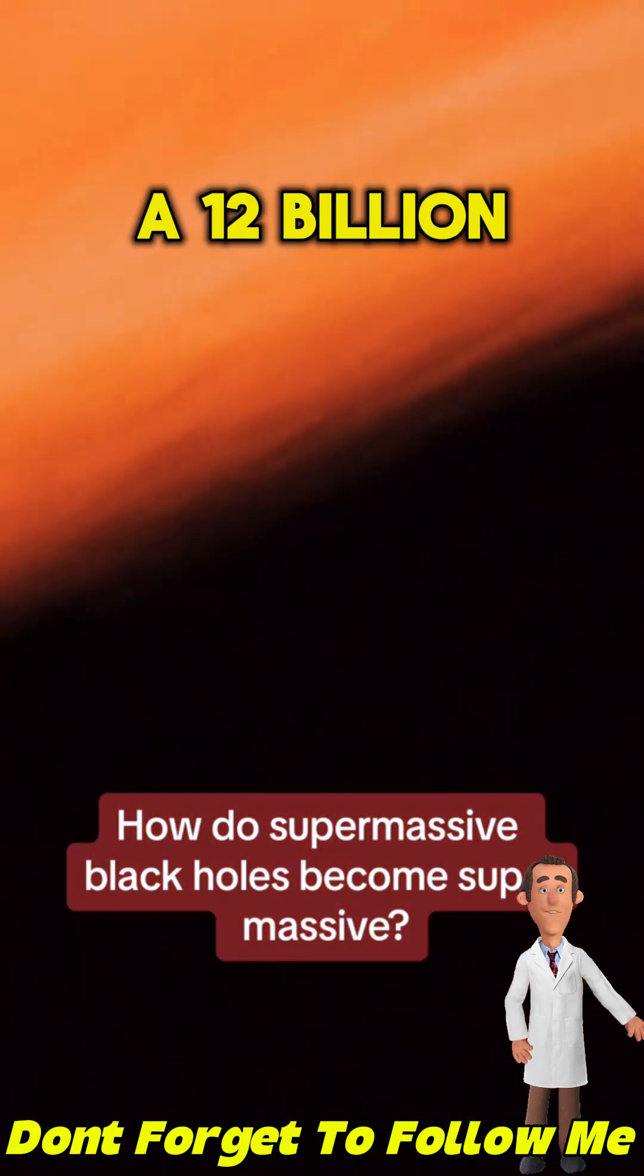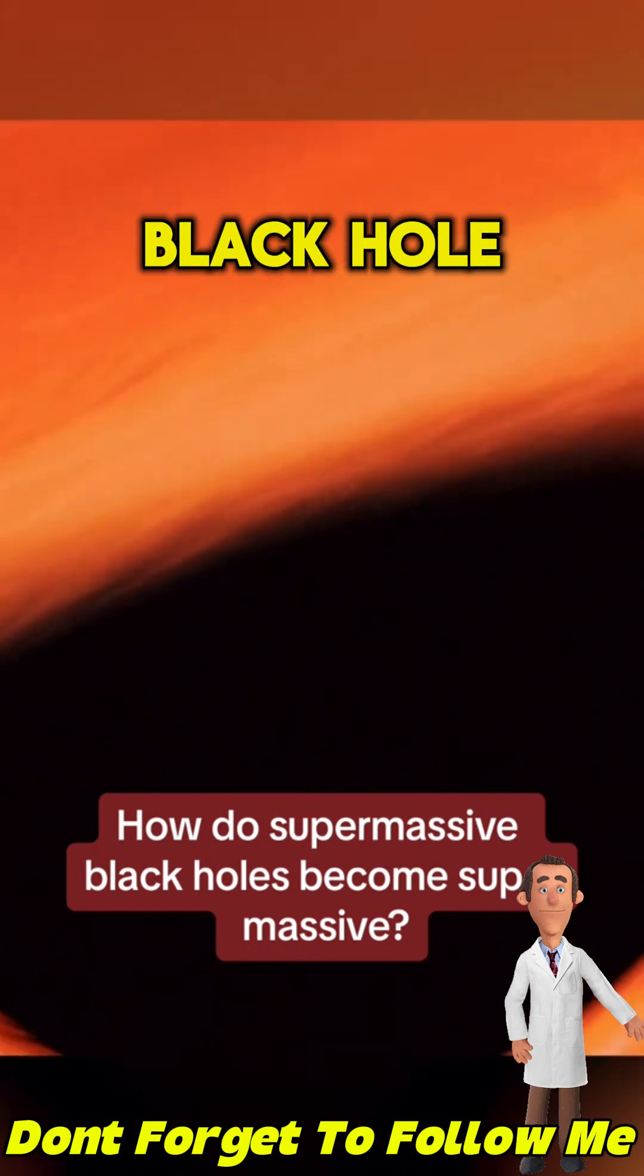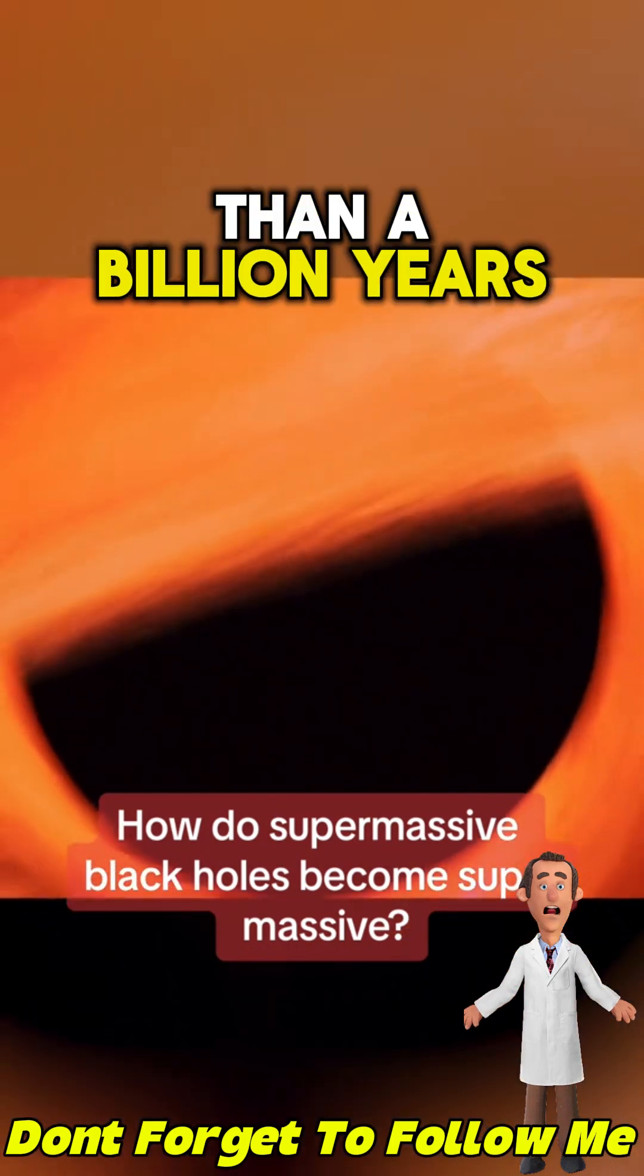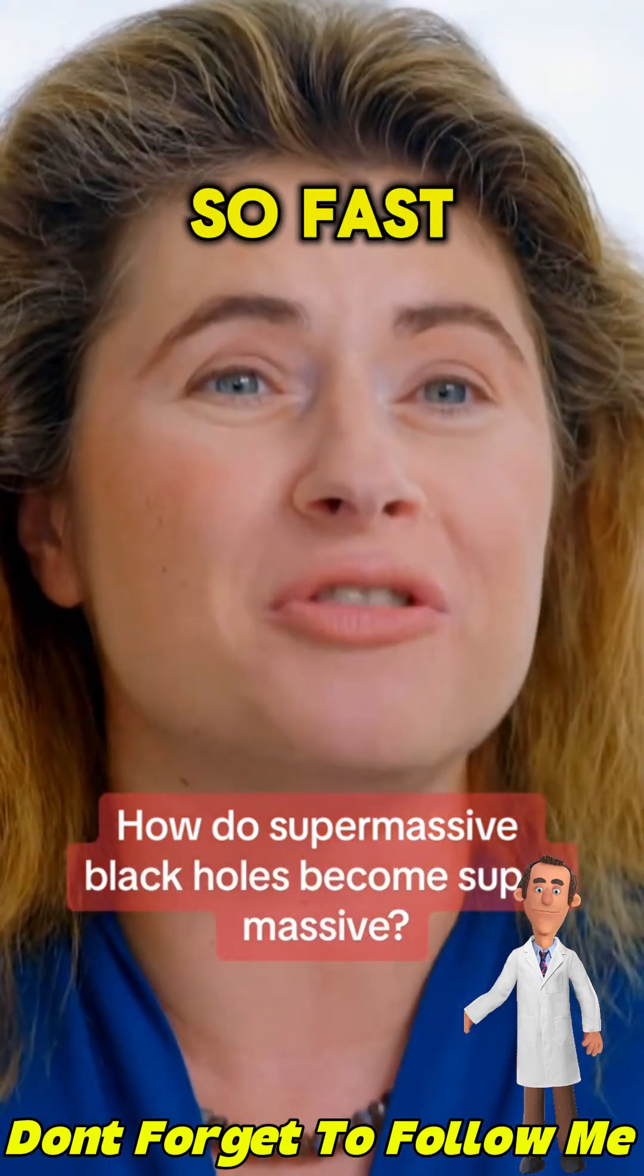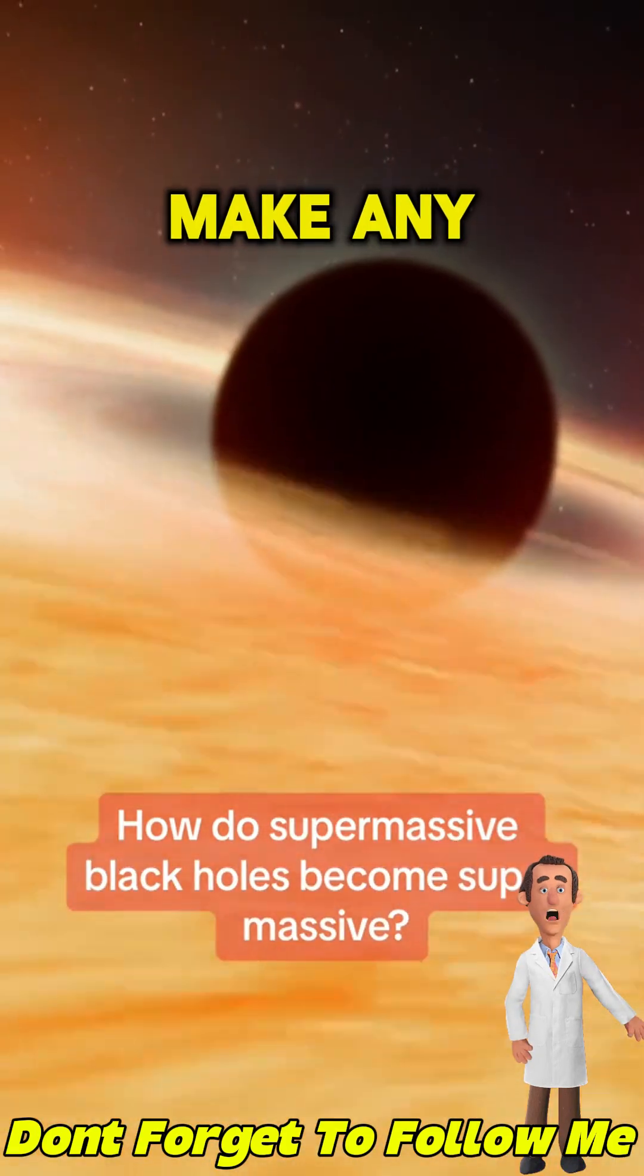But now we've found a 12 billion solar mass black hole that's actually less than a billion years into the universe. How did this thing form so early? How did it grow so fast? It doesn't make any sense.